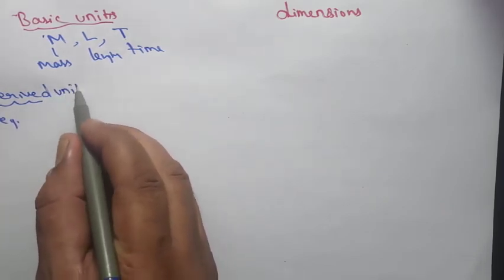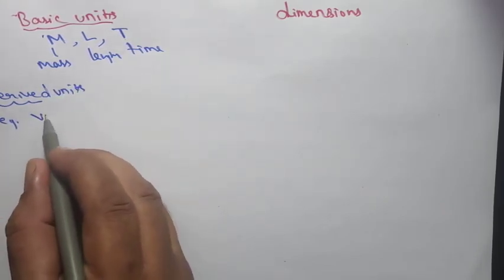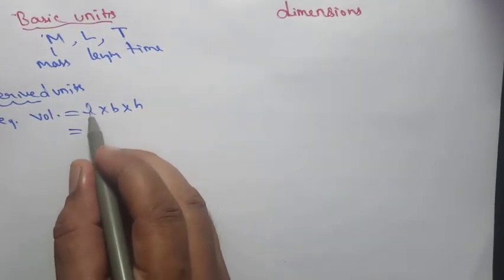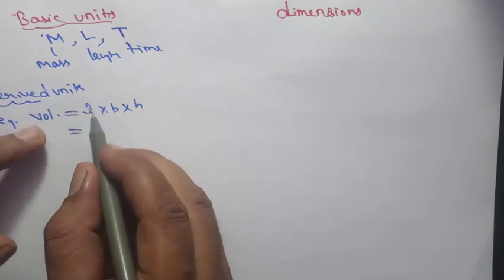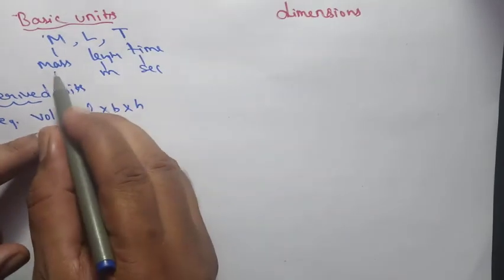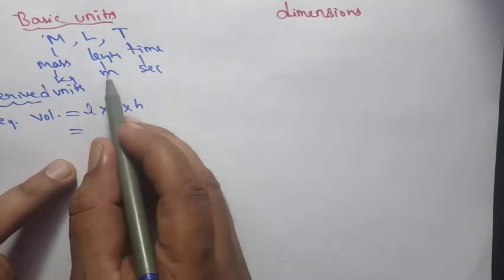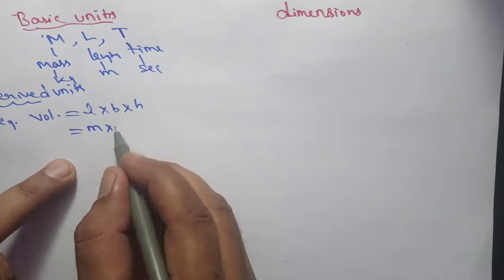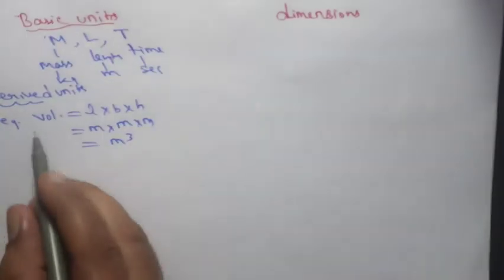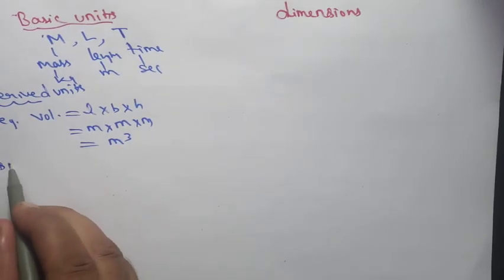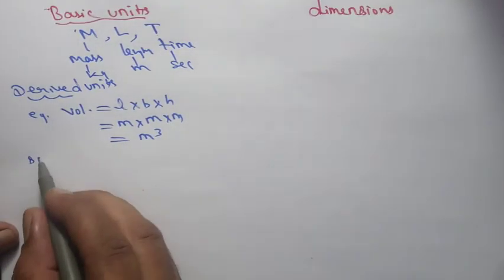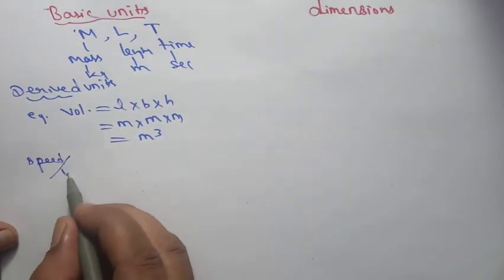Example of derived units: first, volume — volume is length × breadth × height. Length is in meters, so volume = meter × meter × meter = m³. Now let's look at speed or velocity.